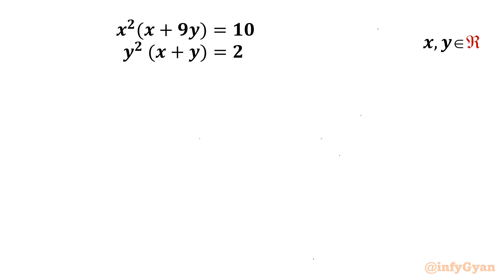Welcome back to Infigyan friends. Today in this video we are going to take up another challenging and interesting system of equations from Math Olympiad examination 2015 Germany. The equations are x² · (x + 9y) = 10 and y² · (x + y) = 2. We have to find out the real solutions.